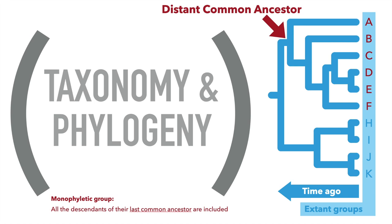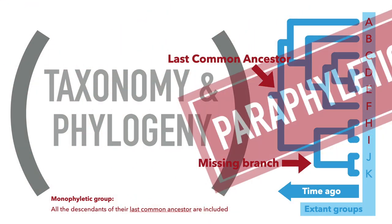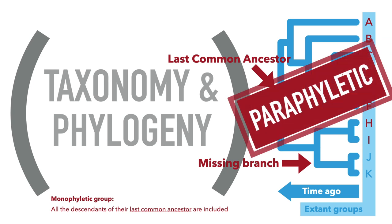However, what happens if we also include H and I? Now, this is the last common ancestor of the group, and you can see that some of their descendants are missing from that group — there is a missing branch. So, this group is said to be paraphyletic. Not all the important groups in biology are monophyletic. For example, we can talk about herbivores, or nitrogen fixers, or prokaryotes — all of these are examples of important groups that are not monophyletic. However, it is important to understand when a group is and when it is not monophyletic, so we can make inferences about their evolutionary history.